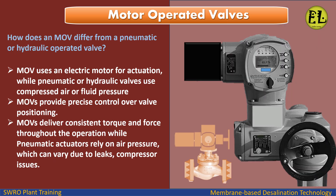How does an MOV differ from a pneumatic or hydraulic operated valve? An MOV uses an electric motor for actuation, while pneumatic or hydraulic valves use compressed air or fluid pressure. MOVs provide precise control over valve positioning and deliver consistent torque and force throughout the operation, whereas pneumatic actuators rely on air pressure which can vary due to leaks or compressor issues.